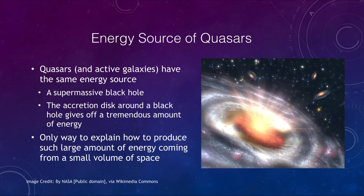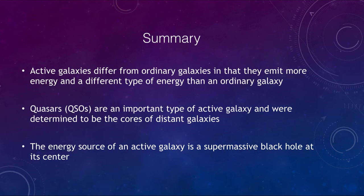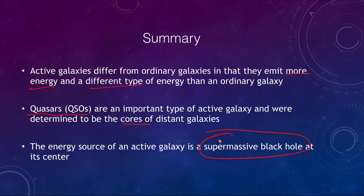To summarize: active galaxies differ from ordinary galaxies in two ways — they emit more energy, and it is a different type of energy: non-stellar energy. Quasars, sometimes called QSOs, are an important type of active galaxy and have been determined to be the core of very distant galaxies. The energy source of that active galaxy is a supermassive black hole at its center, which is being fed by material and therefore giving off a lot of energy. That concludes this lecture on active galaxies and quasars — we'll be back again next time for another topic in astronomy.